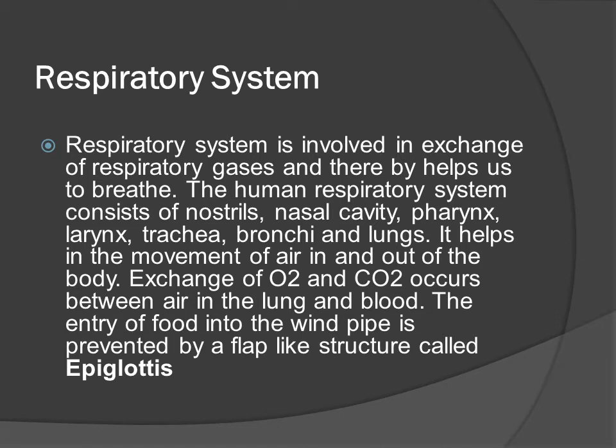The respiratory system is involved in exchange of respiratory gases and thereby helps us to breathe. The human respiratory system consists of nostrils, nasal cavity, pharynx, larynx, trachea, bronchi and lungs. It helps in the movement of air in and out of the body. Exchange of oxygen and carbon dioxide occurs between air in the lungs and blood. The entry of food into the windpipe is prevented by a flap-like structure called epiglottis.